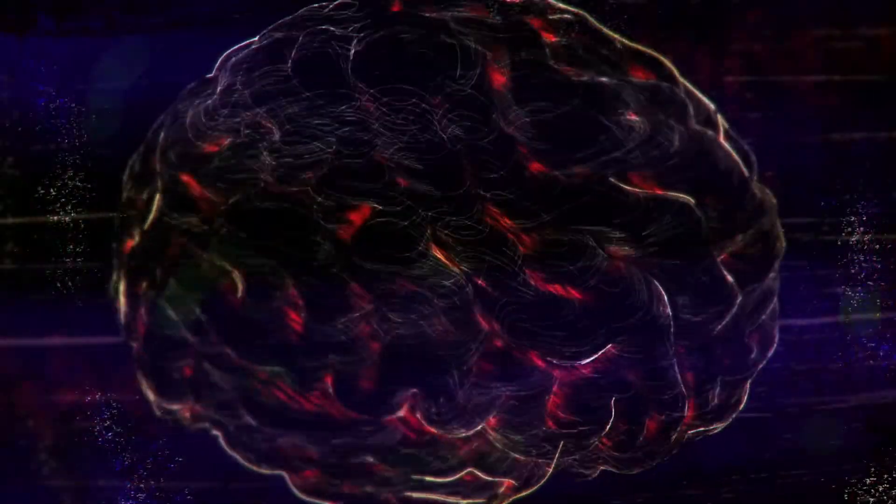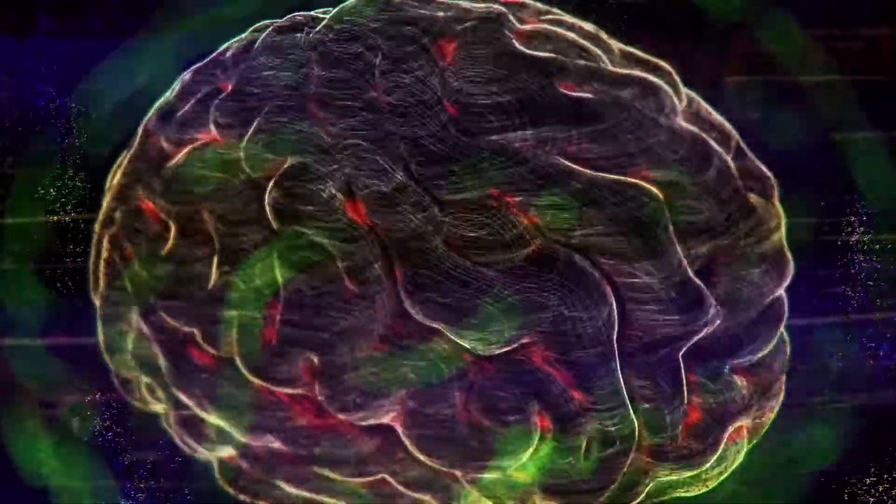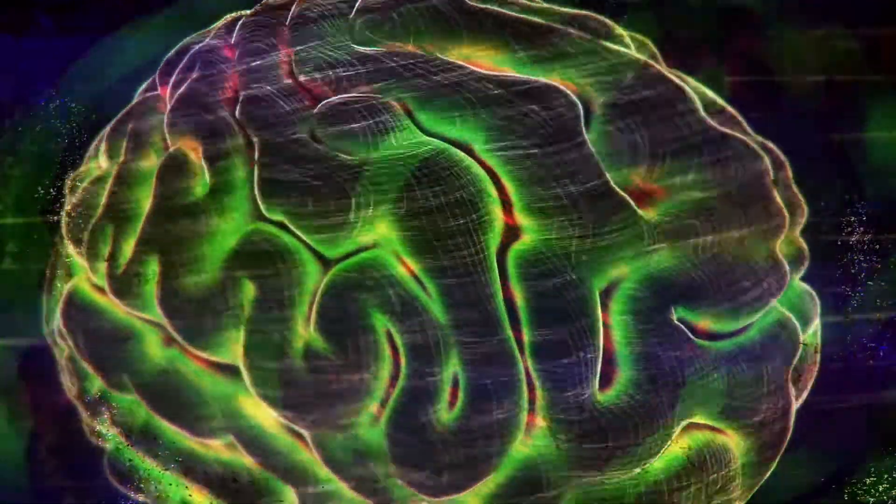The teenage brain processes information almost two times faster than the adult brain. It also gets addicted faster, especially to nicotine.